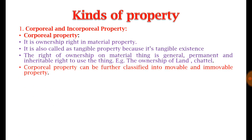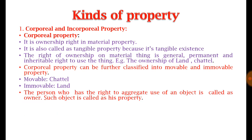The rights available on corporeal property are general in nature and permanently available to the owner, and such properties can be inherited. Corporeal properties can be further classified into two categories: mobile property and immovable property. Mobile property means any chattel, goods, etc., and immovable property means land, a house, etc.